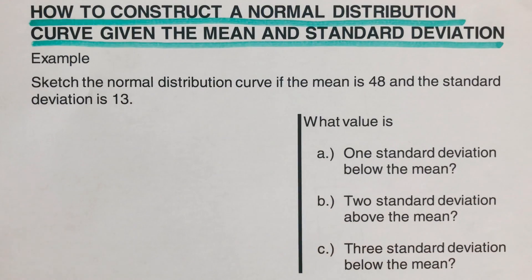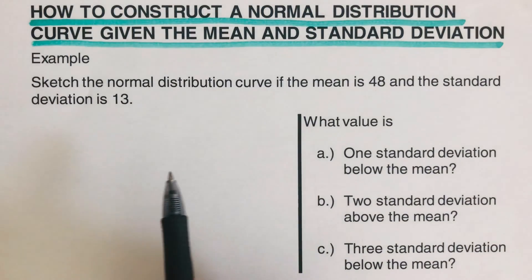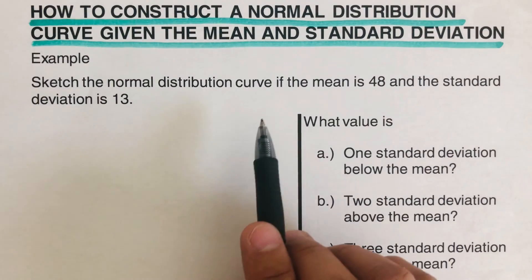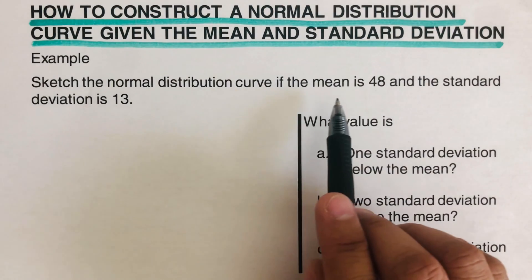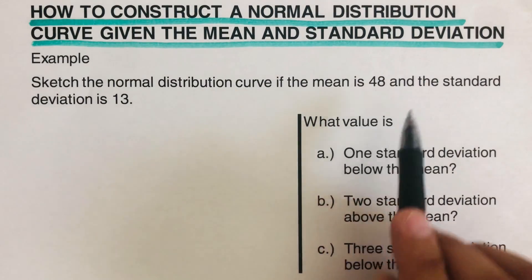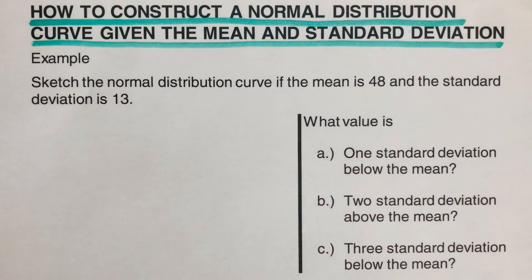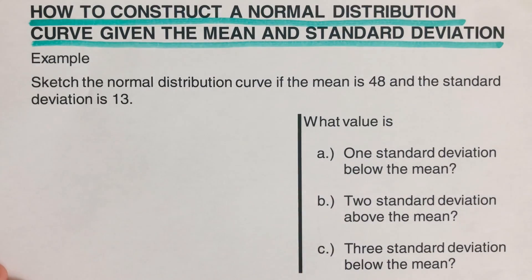Let's take this first example. Sketch the normal distribution curve if the mean is 48 and the standard deviation is 13. The first thing we're going to do is construct the bell curve.